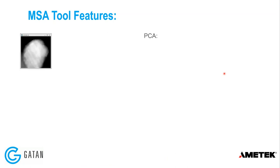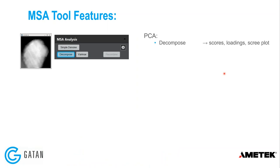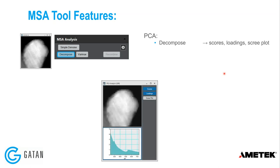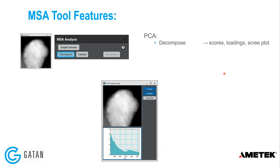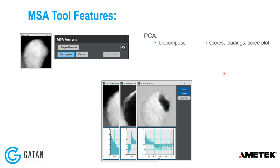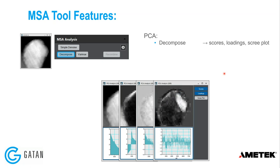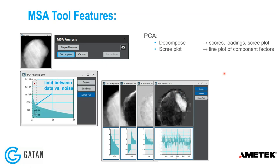So what are the features of the tool? We can do PCA, starting with the decomposition. There are four simple buttons; we start on decompose. Running a PCA decomposition gives us a dataset containing the scores, the loadings, and a scree plot. Here I'm cycling through the different PCA components of this dataset, in order of significance — one, two — and as we get to higher components, the variance is decreasing, which helps us interpret the data.